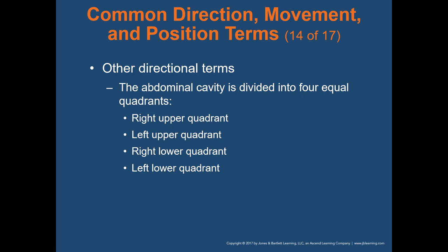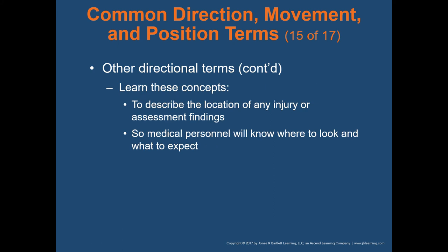The abdominal cavity is divided into four equal quadrants: right upper, left upper, right lower, and left lower. When describing abdominal pain or injuries, you'll use one of those four quadrants. It's important to learn these concepts so you can describe the location of any injury or assessment findings. Medical personnel will know where to look and what to expect upon your arrival at the hospital, so using proper medical terminology for movement, position, and direction is essential.